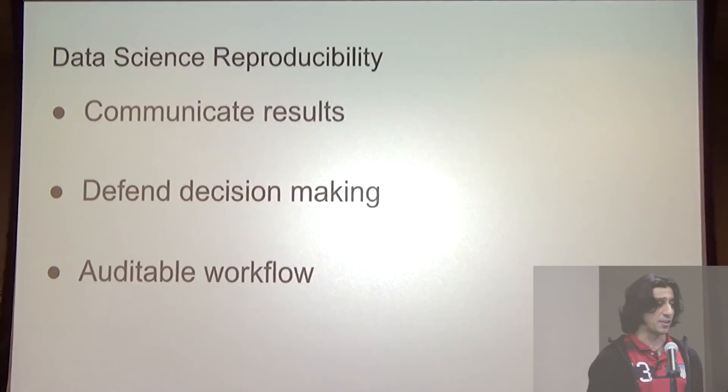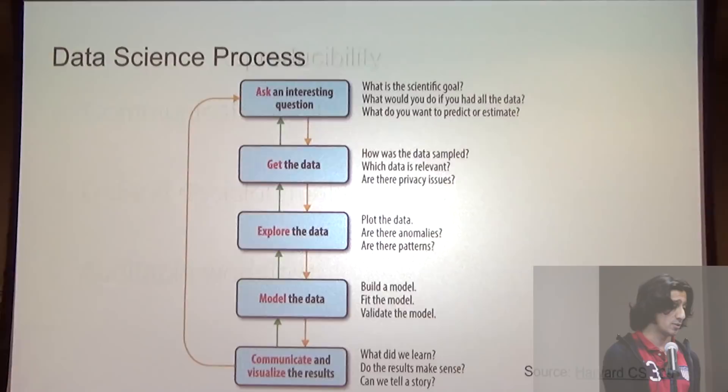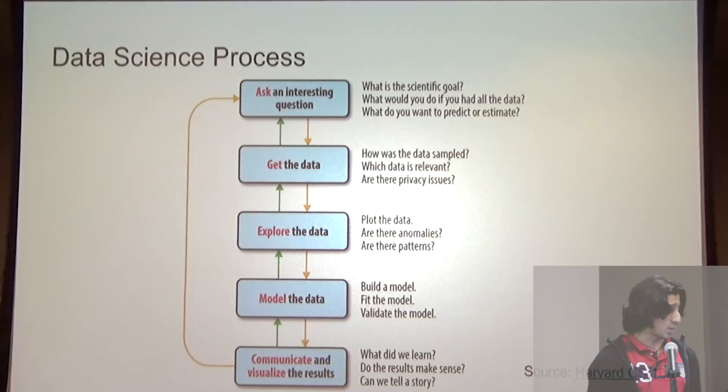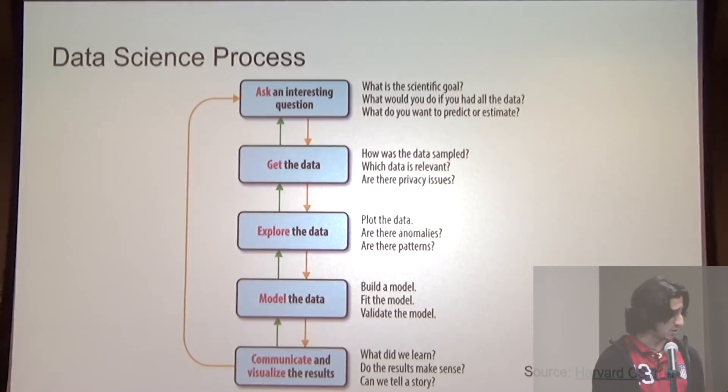Here's a really good overview of the data science process. We start by asking an interesting question — what are we trying to do? The next step is gathering data to answer that question. This phase will involve transforming data from a storage format into a format we can actually use for analysis. Next we'll do some EDA, then we'll start building, fitting, and tuning the model. Finally, we'll communicate our results through a presentation, a blog post, or a paper.